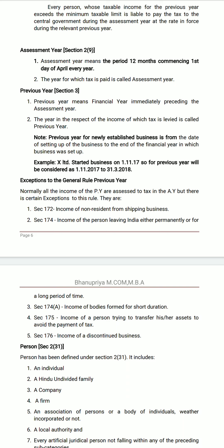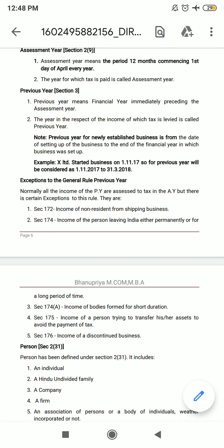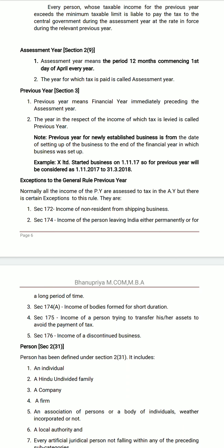Every financial year starts from 1st April and ends on 31st March. For a new business, the previous year may be shorter — it may be 6 months, 7 months, or 8 months. Next, exceptions to the general rule of previous year.